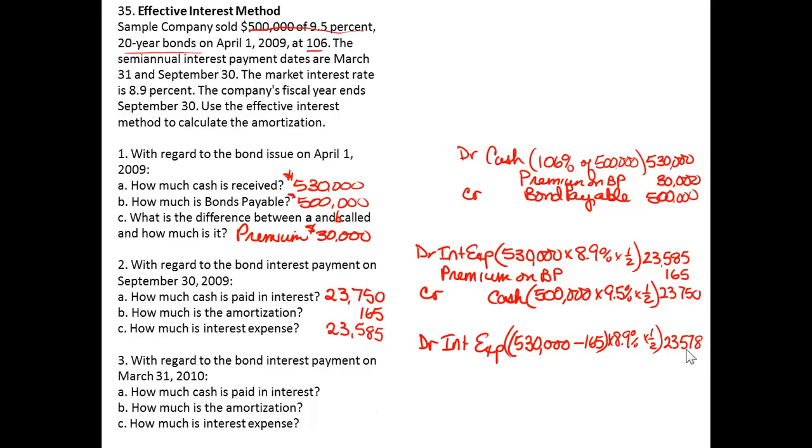So notice the interest expense is getting smaller because the carrying value is shrinking. We're going to credit cash for the same amount as before, the $23,750. So notice the amount that's going to the amortization of the premium, $172, is getting larger because that gap between the cash paid and the interest expense is growing.